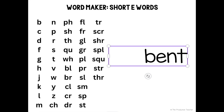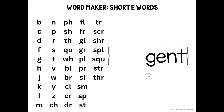Bent — bent is a word. Sent — sent is a word. Remember the letter C makes the S sound before the letter E. Dent — dent is a word. Fent — fent is not a word. Gent — gent can be short for gentleman. Remember the G makes the J sound before the E.